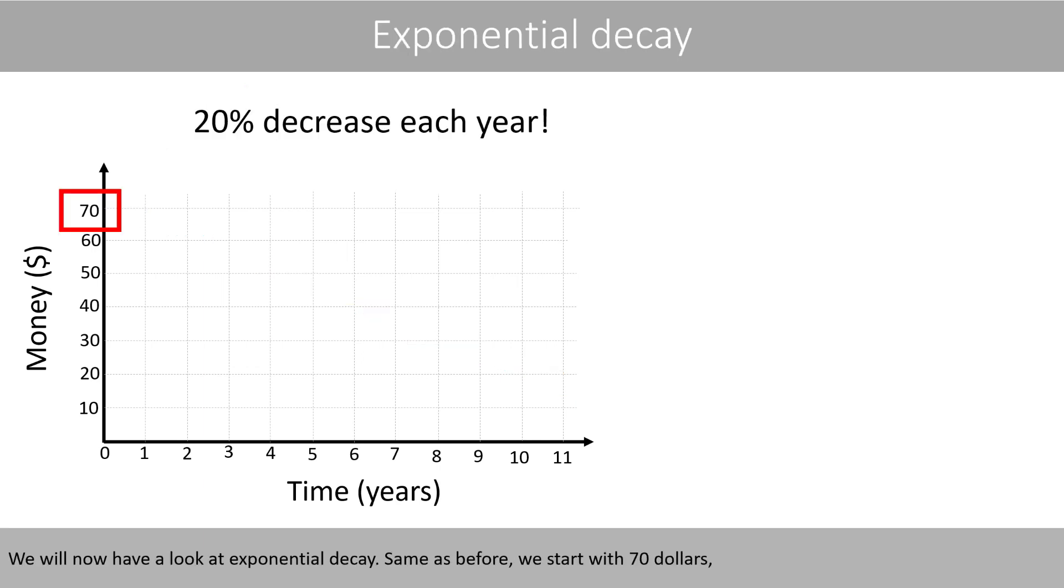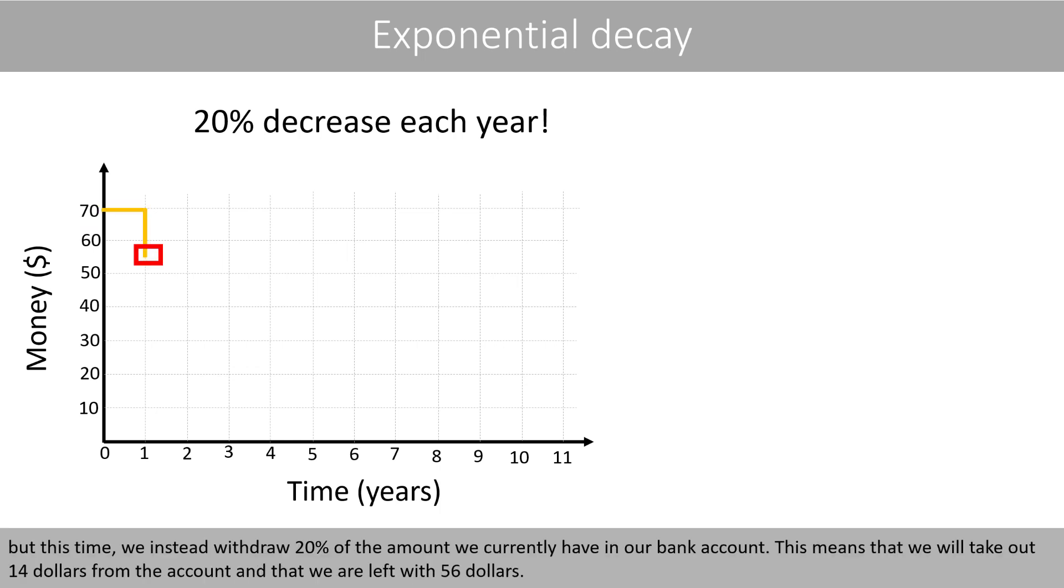We'll now have a look at exponential decay. Same as before, we start with $70. But this time, we instead withdraw 20% of the amount we currently have in our bank account. This means that we will take out $14 from the account, and that we are left with $56.